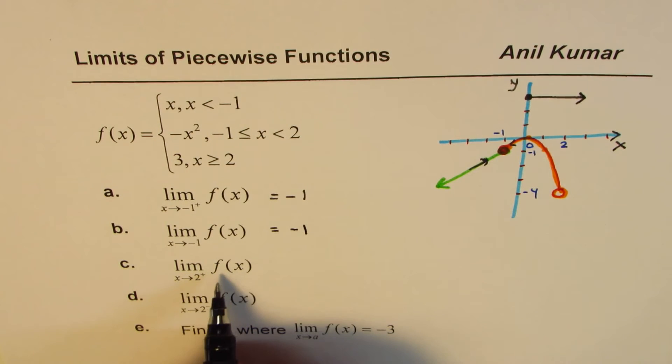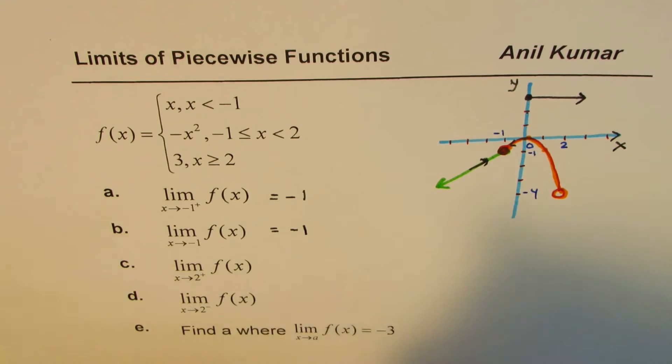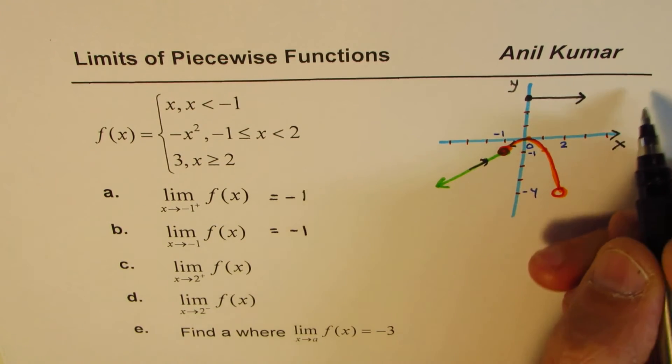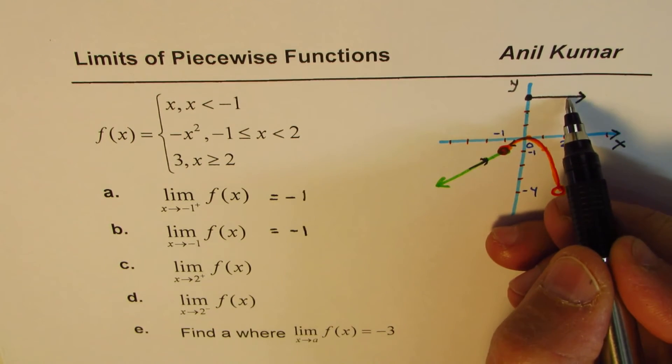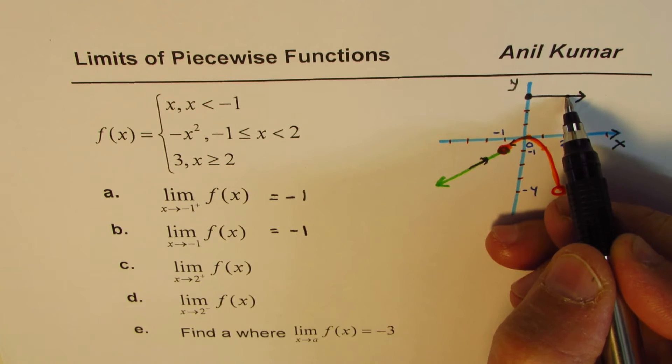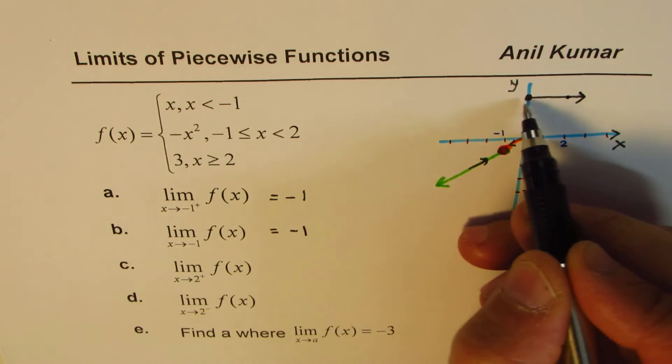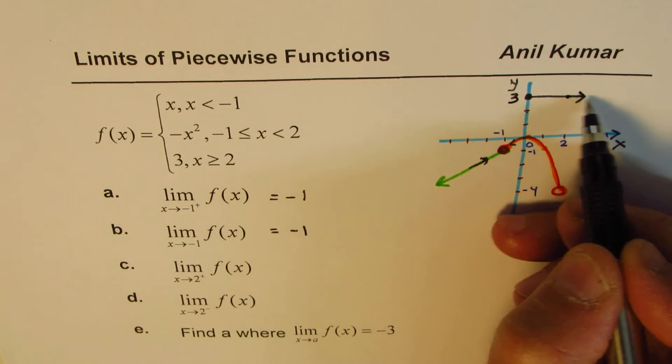Yes. Now, the third one here is, limit of this function when x approaches 2, that positive on the top means 2 from the right side. So you are approaching 2 from the right side. So if you are coming from the right side, you will hit this portion, right?